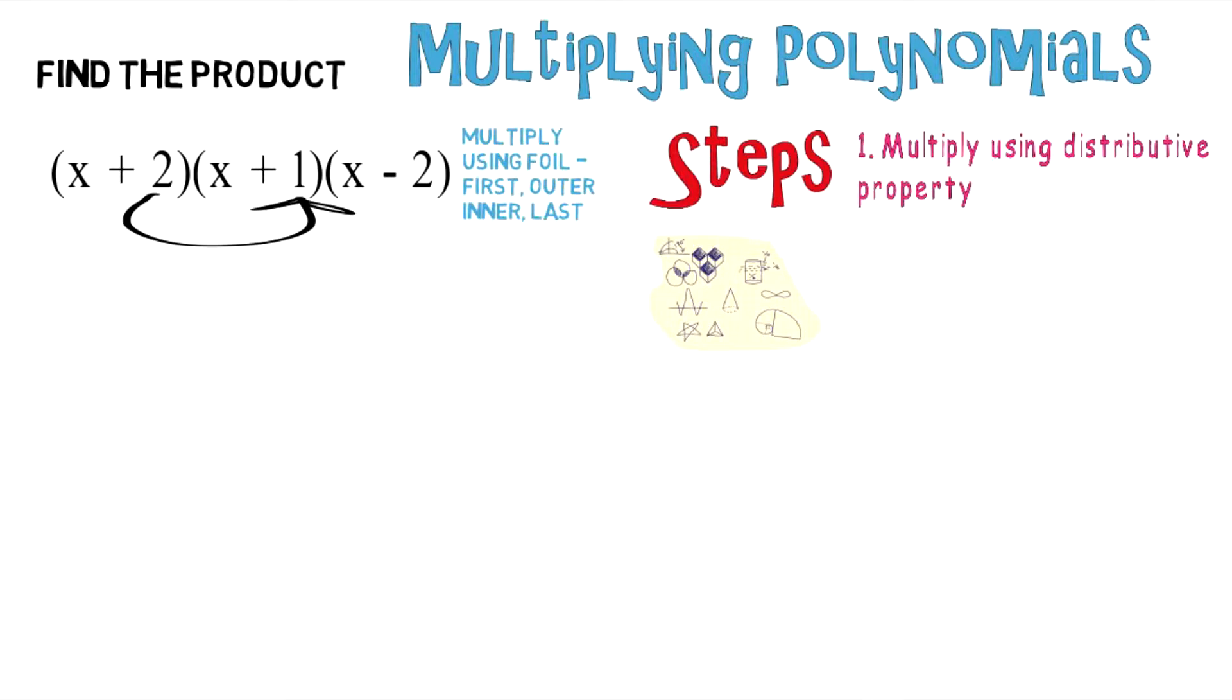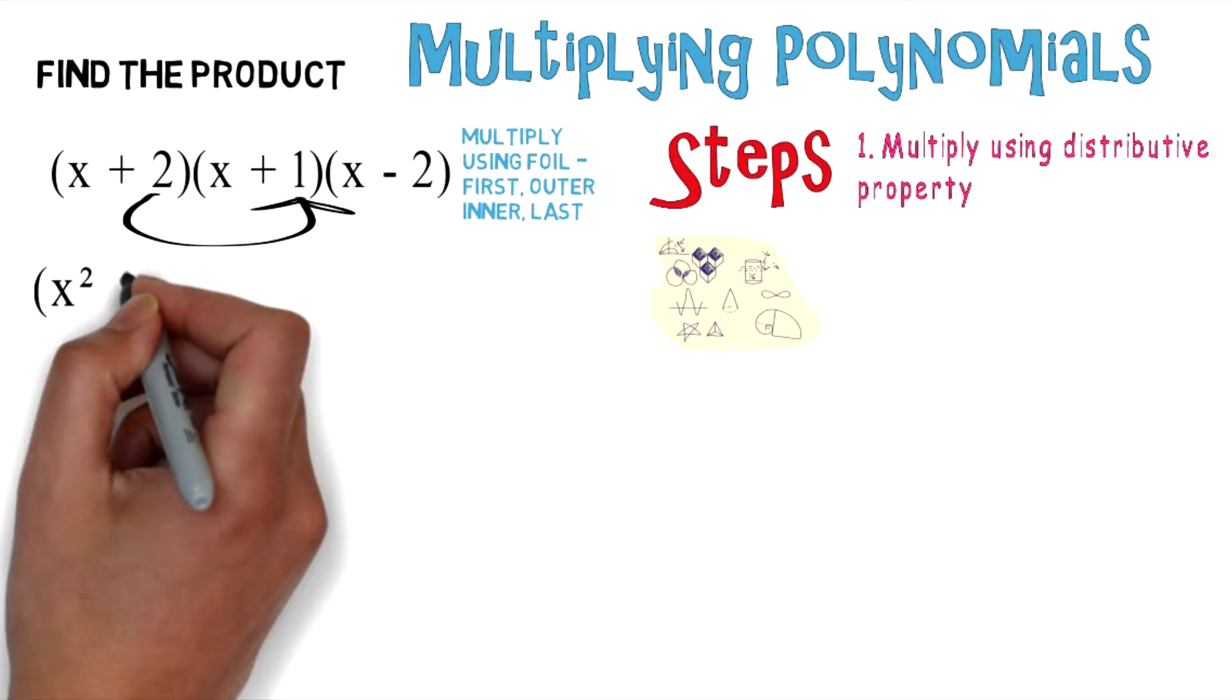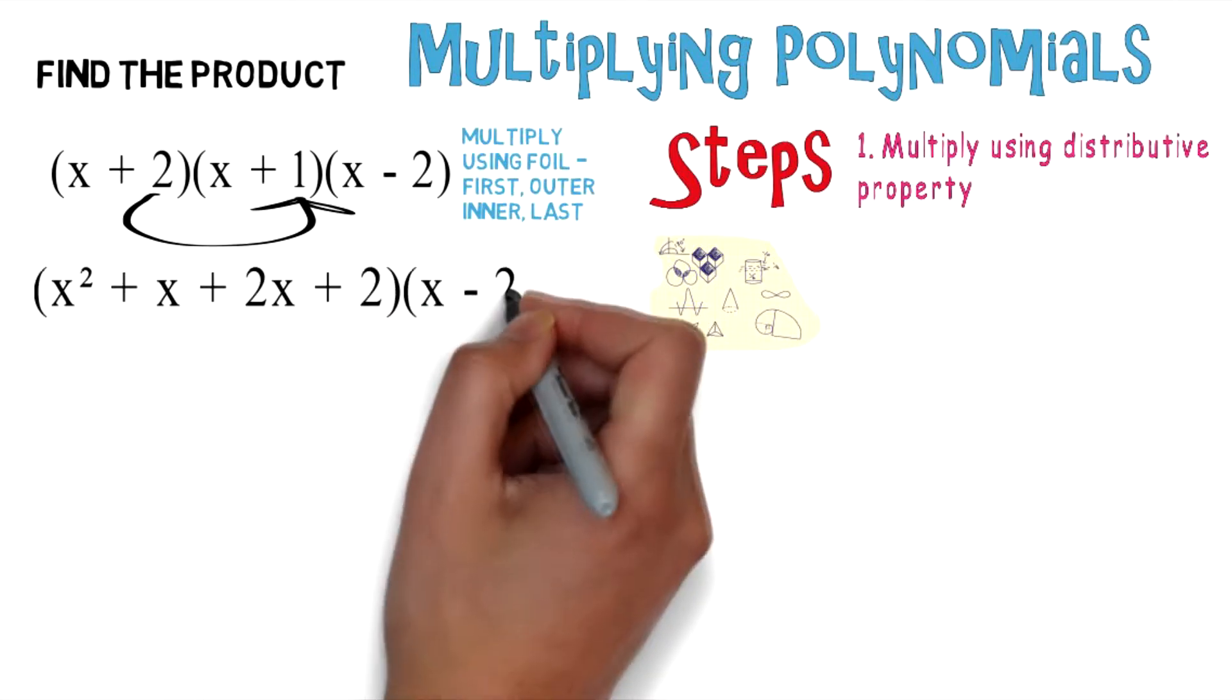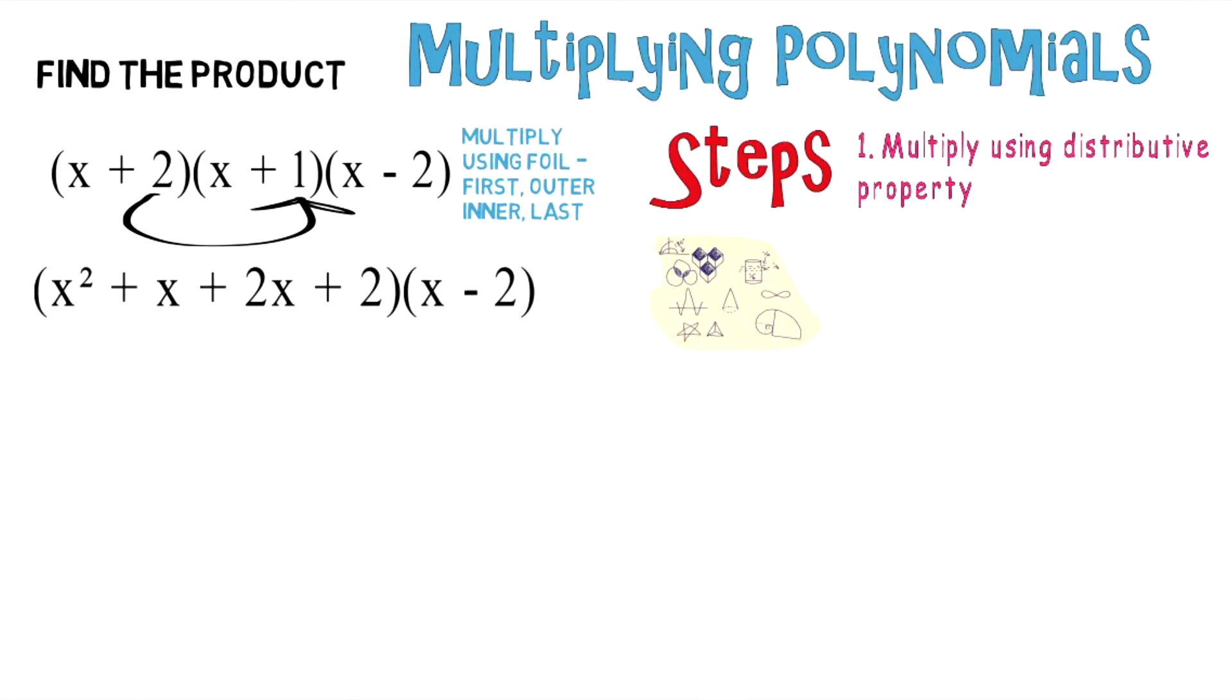When you multiply that out, you wind up with x² + x + 2x + 2, and don't forget you're still left with (x - 2).